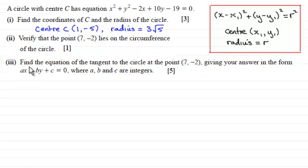Now in part 3 we're asked to find the equation of the tangent to the circle at the point 7 minus 2, giving your answer in the form ax plus by plus c equals 0, where a, b and c are integers for 5 marks.